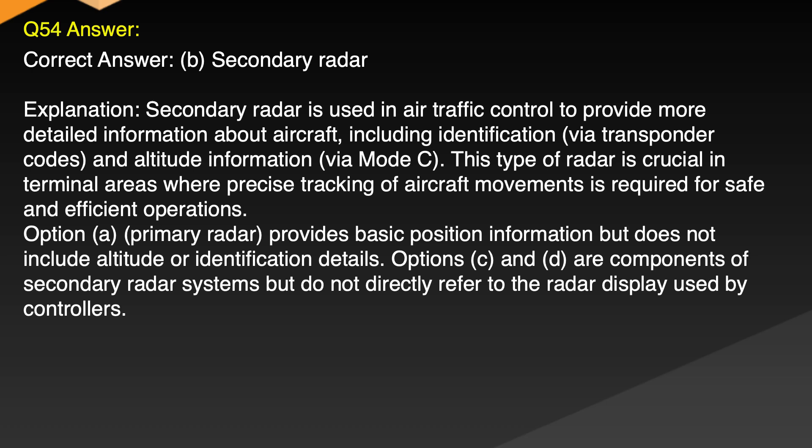Explanation: Secondary radar is used in air traffic control to provide more detailed information about aircraft, including identification via transponder codes and altitude information via mode C. This type of radar is crucial in terminal areas where precise tracking of aircraft movements is required for safe and efficient operations. Option A, primary radar, provides basic position information but does not include altitude or identification details. Options C and D are components of secondary radar systems but do not directly refer to the radar display used by controllers.